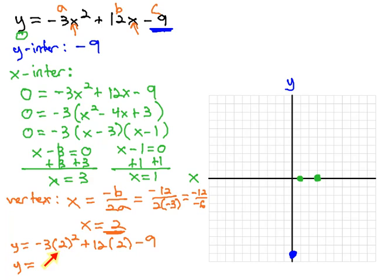Working out the first term, 2 squared is 4, and 4 times negative 3 is negative 12, plus 12 times 2 is 24, minus 9. Negative 12 plus 24 minus 9 is equal to 3. This is the y-coordinate of the vertex.